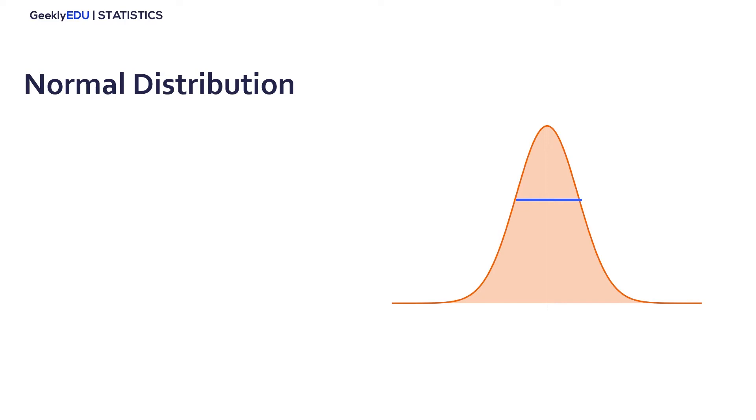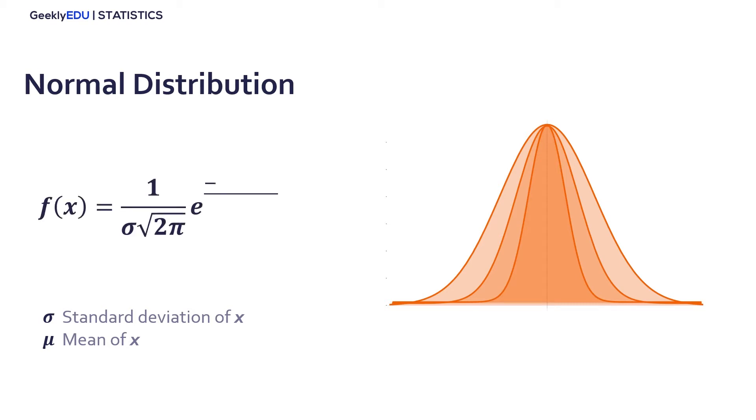When the standard deviation is small, we will have a slimmer curve, and when the standard deviation is big, the width of the curve will increase. Then, the normal distribution plot is a function of x, being x the variable we are studying that depends on the standard deviation of x and the mean of x that follows the next equation.